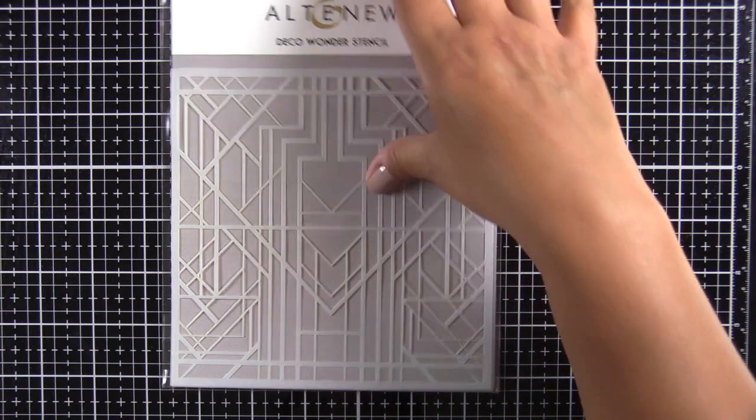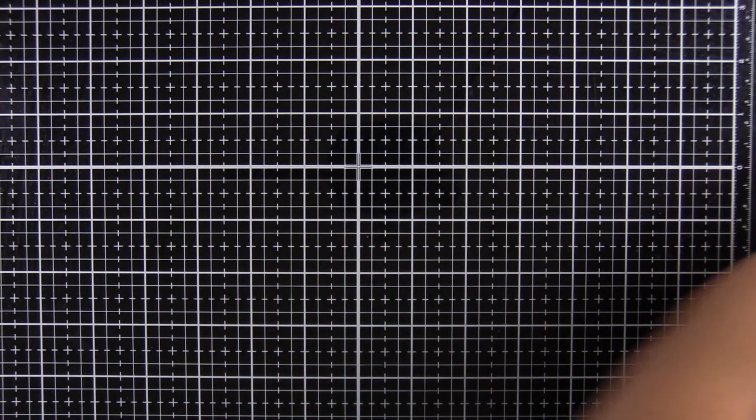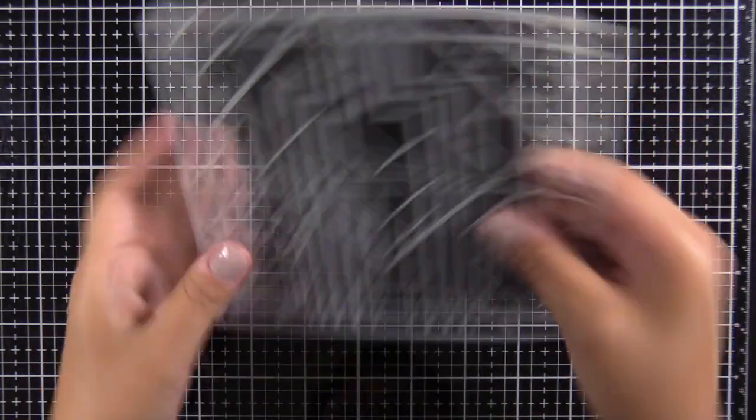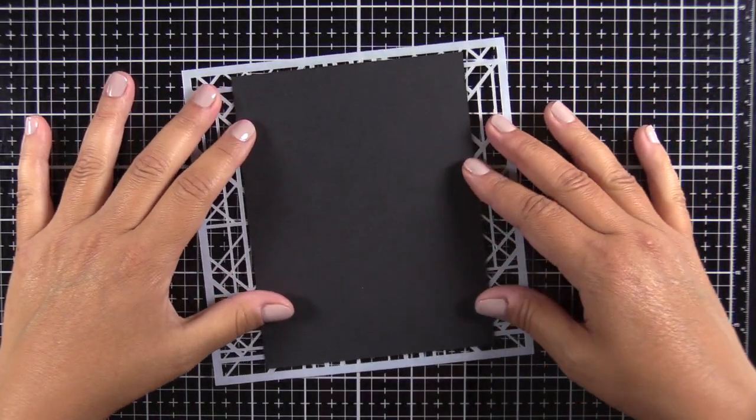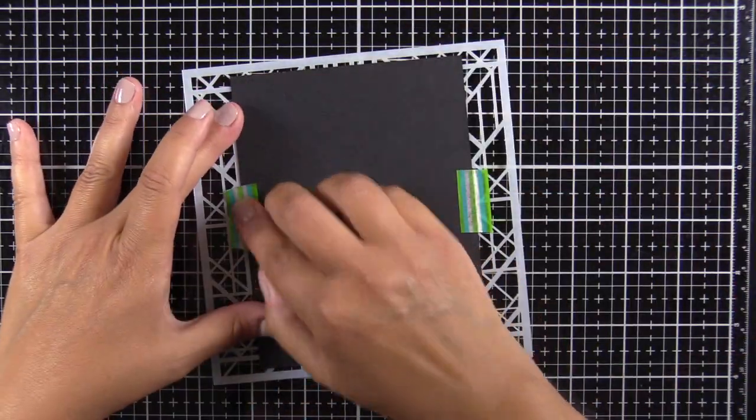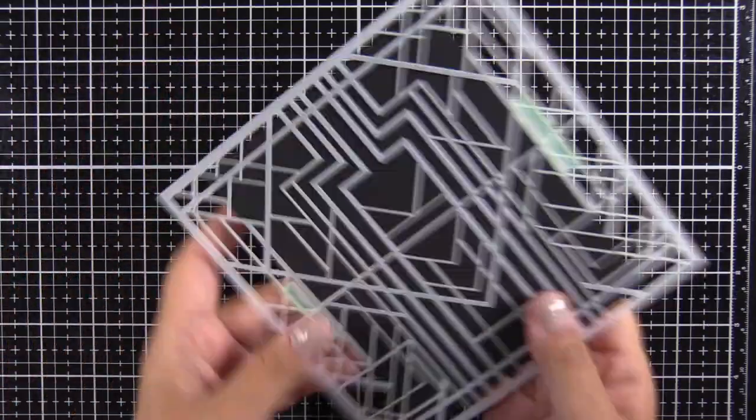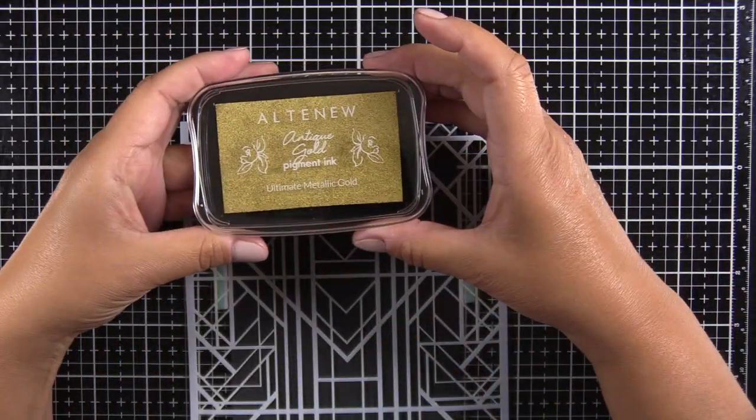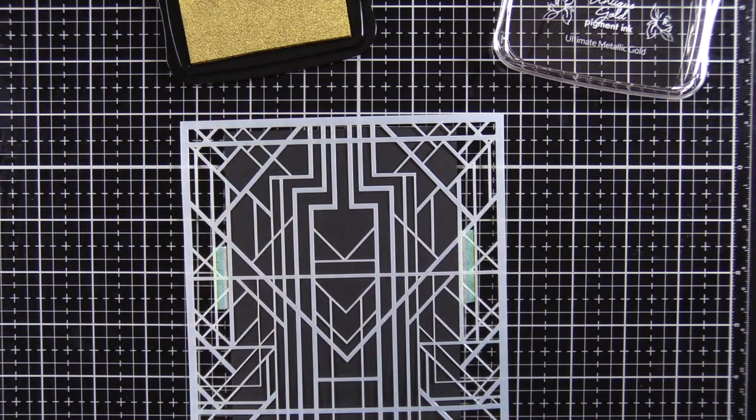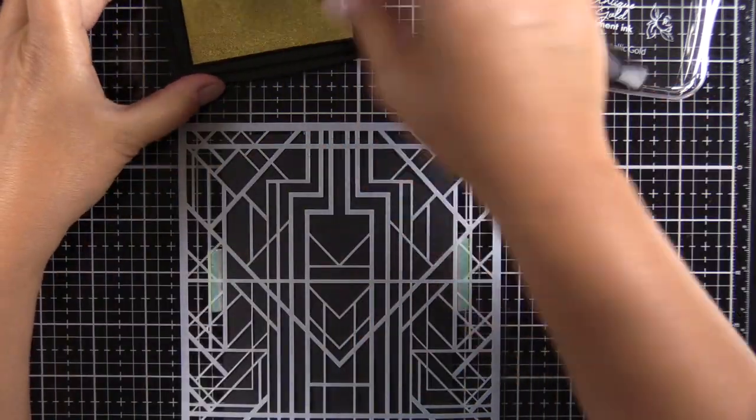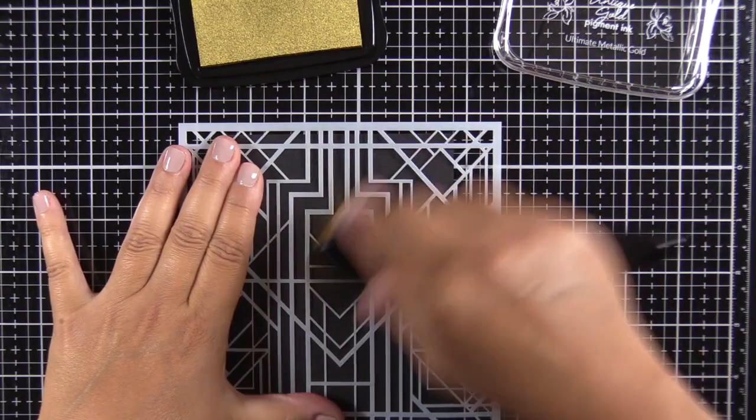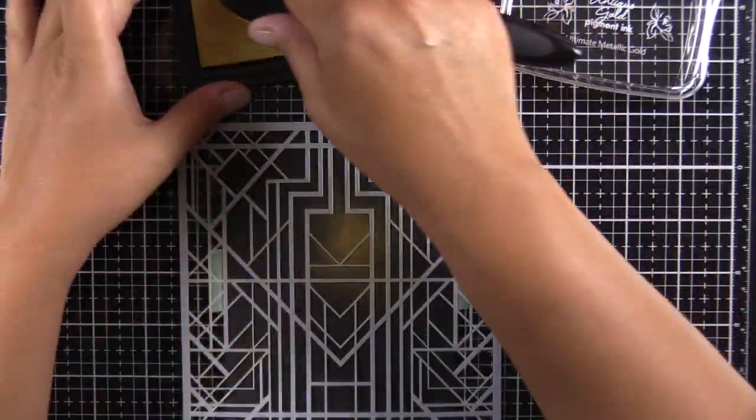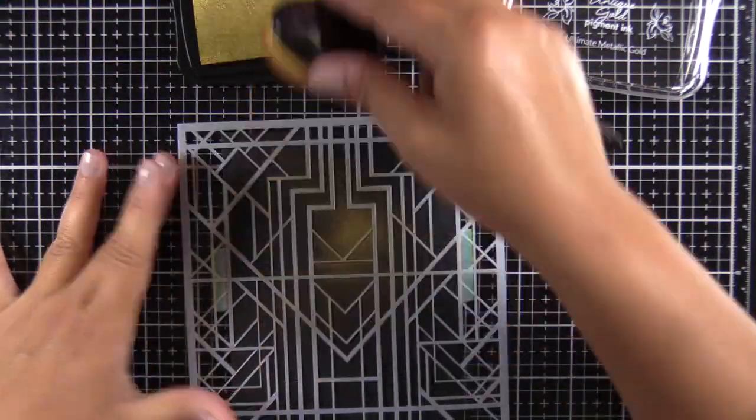So we'll go ahead and get started. If this film footage looks vaguely familiar to you, it is because it's the footage that I used for the product videos. I liked how the panels turned out so much in several of the videos from this release that I ended up turning them into cards. So this is the antique gold pigment ink and I have an A2 size piece of black cardstock.